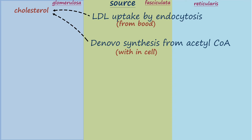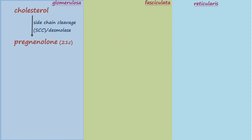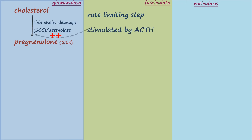The first reaction is the conversion of cholesterol, which is a 27-carbon compound, to pregnenolone, which is a 21-carbon compound. This is catalyzed by side-chain cleavage enzyme or desmolase, in which the side chain of cholesterol is cleaved to form a 21-carbon compound. This is a very important reaction as it is the rate-limiting reaction, and this step is stimulated by ACTH.